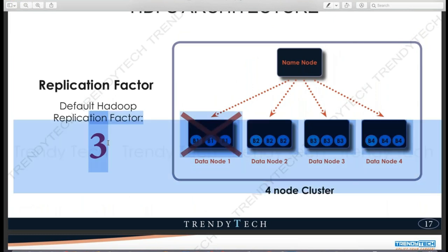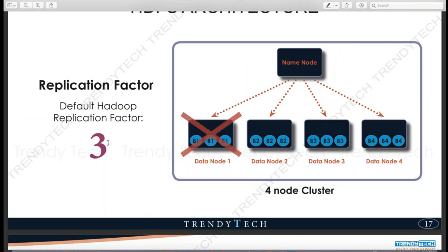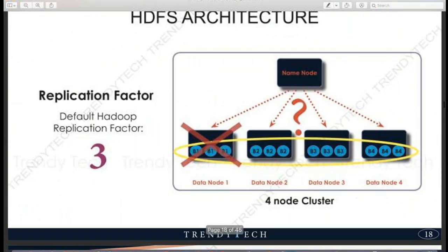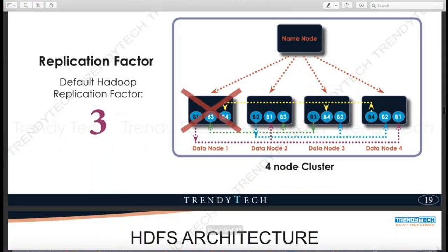The replication factor can be tuned by Hadoop administrators — they can set it to two for non-sensitive applications, one for a proof of concept, or five for highly critical data. The default setting is three and works in most cases. Replicas should be kept on different machines. You can see B1 is here, B1 is here, and B1 is here — three replicas on three different machines. If one machine goes down, the other two copies are still available.